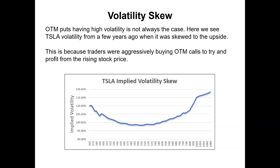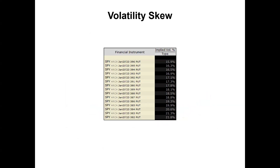Out-of-the-money puts having high volatility is not always the case. Here we see Tesla volatility from a few years ago when it was actually skewed to the upside, because traders were aggressively buying out-of-the-money calls to profit from the rising stock price. You might remember that time when Tesla was on a massive bull run — lots of traders were buying call options, creating huge demand. With Tesla around 535, out-of-the-money call options were trading with really high implied volatility due to that demand pushing up prices. Currently, we can see some volatility skew in SPY — at-the-money puts at about 15-16% volatility, with implied volatility rising as we go further out of the money.